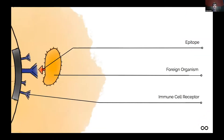The basic biology of this is that every disease or pathogen, like a viral infection, bacterial infection, or a tumor cell, has an epitope. And this epitope is what our immune cells bind to, and our models can predict this binding.